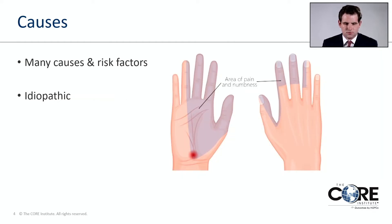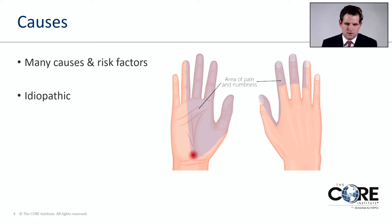There are many causes and risk factors; however, most commonly the cause is unknown, or what we call idiopathic. The thinking is that genetics and the way our wrists are made predispose us to this condition — certain patients are born to get it — and exposure to certain risk factors as we go through life can cause the condition to come on. Anything that causes increased swelling or inflammation within the carpal tunnel will put pressure on the nerve.